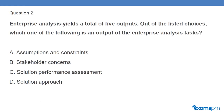Question 2: Enterprise analysis yields a total of 5 outputs. Out of the listed choices, which one of the following is an output of the enterprise analysis tasks? A. Assumptions and constraints. B. Stakeholder concerns. C. Solution performance assessment. D. Solution approach.